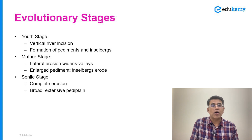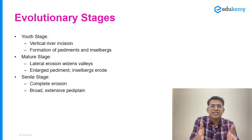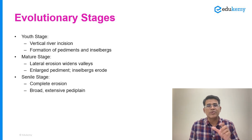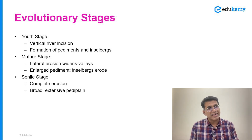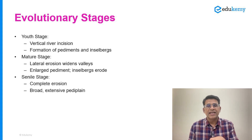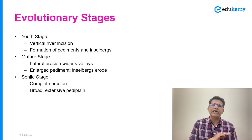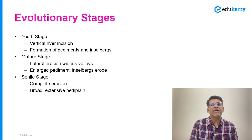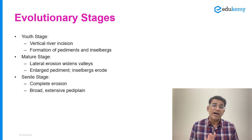In the mature stage, vertical erosion stops and the river starts performing lateral erosion. The valleys start widening and as widening occurs, the pediment starts growing gradually. Very importantly, by the end of the mature stage, even the inselbergs are slowly getting eroded. Finally, in the last senile stage, the landscape is completely eroded and flattened. There is an extensive pediment — a very gentle sloping landscape — that covers the entire area of the savannah topography.